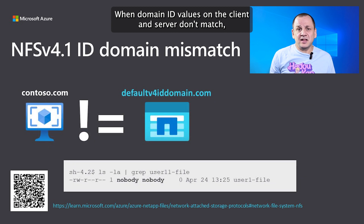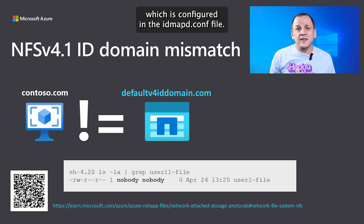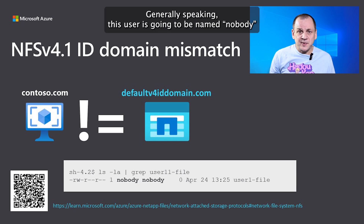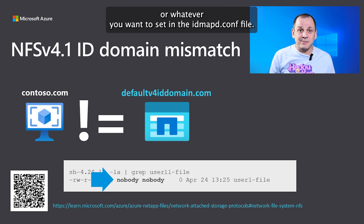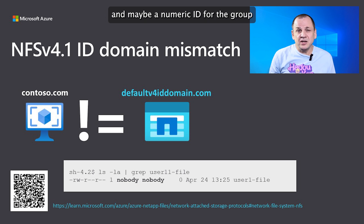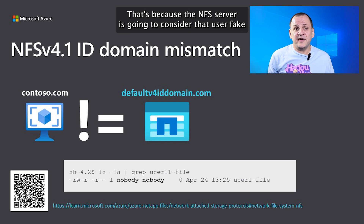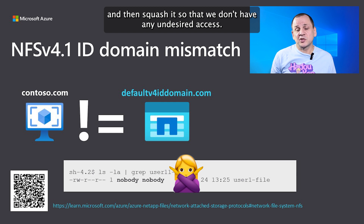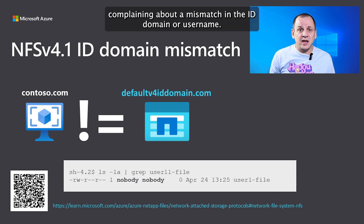When domain ID values on the client and server don't match, the user requesting access gets squashed to an anonymous user, configured in the idmapd.conf file. Generally, this user is named "nobody" with a numeric ID of either 99 or 65534. When you do file and directory listings, you'll see the nobody user and possibly a numeric ID for the group rather than the expected access. That's because the NFS server considers that user fake and squashes it to prevent undesired access. In the NFS client's logs, you'd see an error message about a mismatch in the ID domain or username.